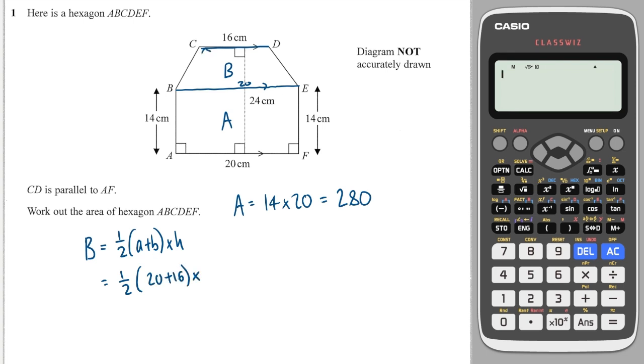And then the height is the gap between the two parallel sides. So because the overall shape is 24 and the height of the rectangle is 14, 24 minus 14 is 10. So therefore the height of this trapezium must be 10. So I can go to my calculator and I can press a half multiplied by open brackets 20 plus 16 and then multiply that by 10. And I should get 180.